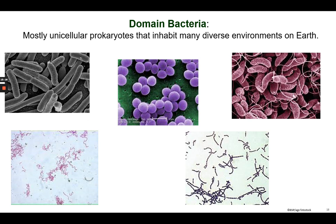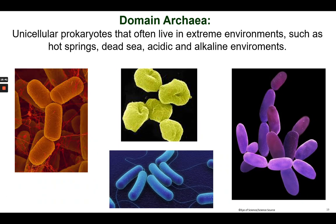Bacteria can have different shapes — rods, spheres, curved forms, and spirochetes, which are very spiral in shape. They can form chains and clusters, but they are all single-celled and prokaryotic. The domain Archaea looks very similar to bacteria, but their cell wall is made up of different chemicals, which is why they are placed in their own domain. Also, many archaea are extremophiles — they live in extreme environments like the hot springs at Yellowstone or the Dead Sea, as well as acid and alkaline environments.